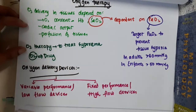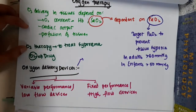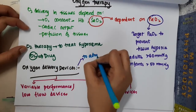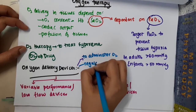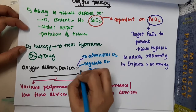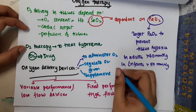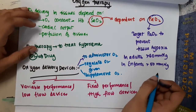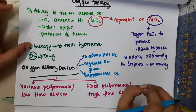Why do we need oxygen delivery devices? These devices are necessary to administer oxygen, to regulate the oxygen demand given, and to supplement oxygen to the patient. The amount of oxygen given should always be carefully managed.